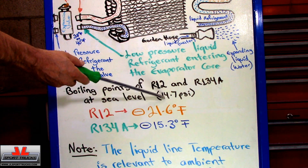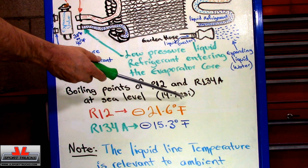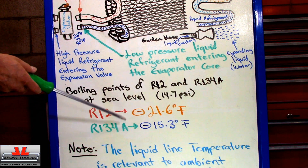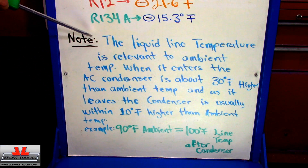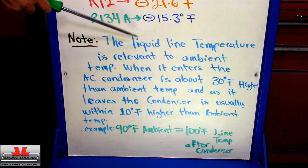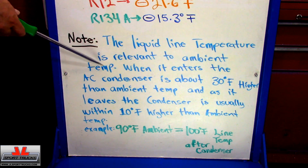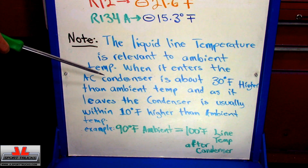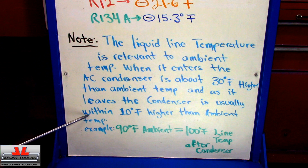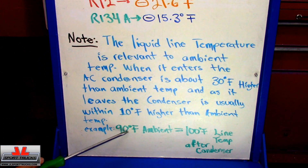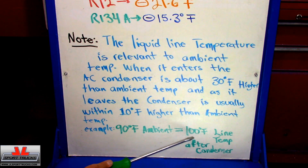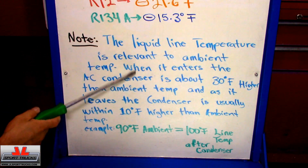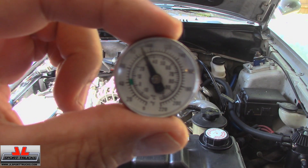Take note that these temperatures are at sea level, where atmospheric pressure is 14.7 PSI, because these temperatures are going to vary depending on the pressure. The liquid line temperature — the high pressure line — is relevant to the ambient temperature. When it enters the AC condenser it's about 30 degrees higher than the ambient temperature, and as it leaves the AC condenser it's usually within 10 degrees higher than the ambient temperature. This is just a rule of thumb, as different pressures are going to create different temperatures on the line. We're going to check our temperatures in real life and see what the lines read.